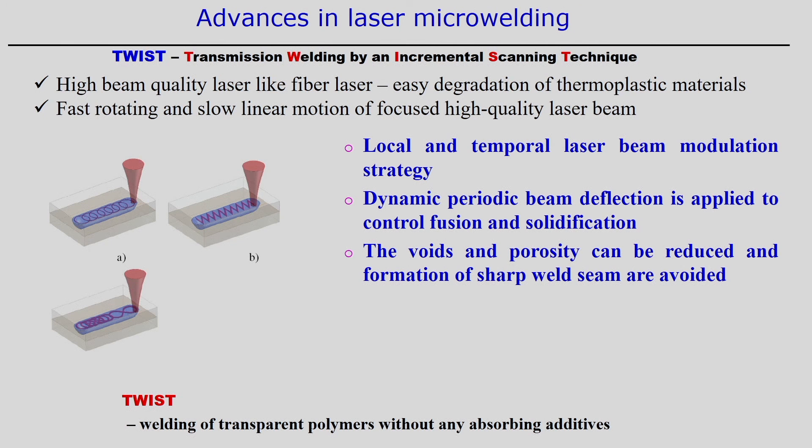Voids and porosity can be reduced using TWIST, and formation of sharp weld seams is avoided — sharp interruptions that occur in straight linear scanning paths are eliminated because the beam moves in a zigzag pattern. This improved bonding between the two surfaces minimizes distortion. Importantly, welding of transparent polymers without any absorbing additives becomes possible, since TWIST is a variant of laser transmission welding. When laser light is transparent to a particular polymer, absorption at the interface is difficult, but a zigzag scanning path promotes absorptivity at the interface even for transparent materials.